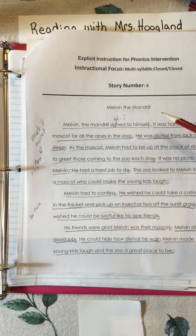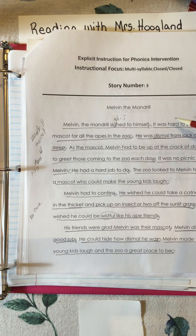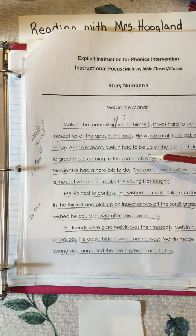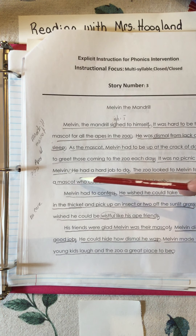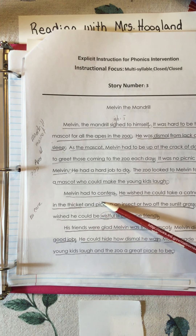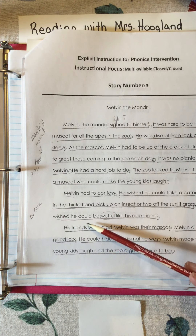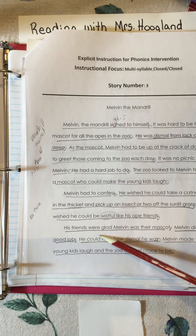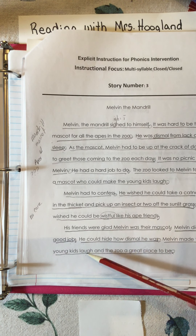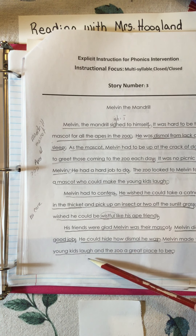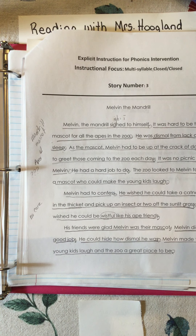Now I'll show you how to push the sentences into each other and make it into a whole story. 'Melvin the mandrill sighed to himself. It was hard to be the mascot for all the apes in the zoo. He was dismal from lack of sleep. As the mascot, Melvin had to be up at the crack of dawn to greet those coming to the zoo each day. It was no picnic for Melvin - he had a hard job to do. The zoo looked to Melvin to be a mascot who could make the young kids laugh. Melvin had to confess he wished he could take a catnap in the thicket and pick up an insect or two off the sunlit grass. He wished he could be wistful like his ape friends. His friends were glad Melvin was their mascot. Melvin did a great job. He could hide how dismal he was. Melvin made the young kids laugh and the zoo a great place to be.'